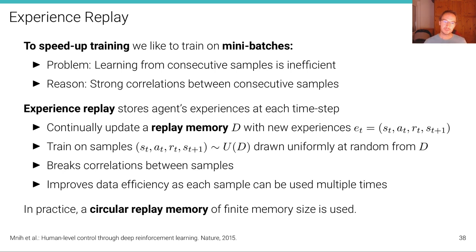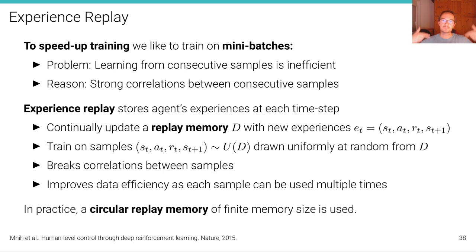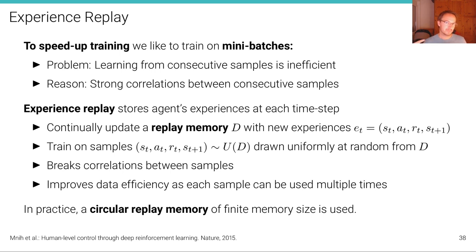In practice, what's typically used is a circular replay buffer of a finite memory size. For example, with 100 elements in the buffer, we add new elements with every iteration and remove old elements — or randomly selected elements — from that buffer.